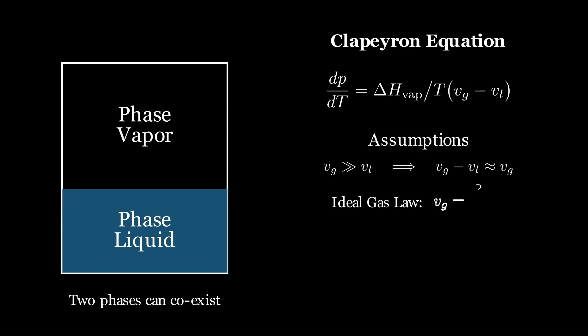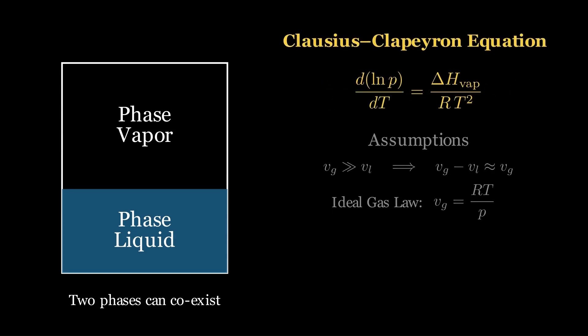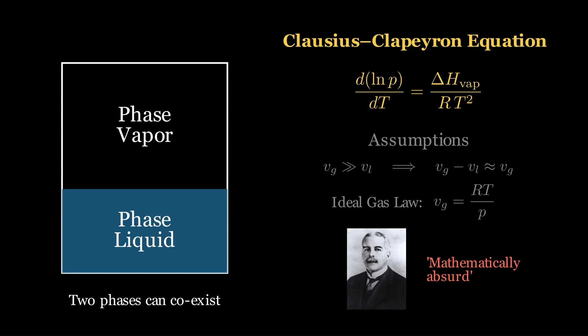Then, assuming ideal gas behavior, we substitute V_g as RT over P. This leads us to the familiar Clausius-Clapeyron equation, relating the change in vapor pressure to temperature. In spite of these assumptions, the equation holds true for a variety of substances. But Lewis found this derivation mathematically absurd, although useful.